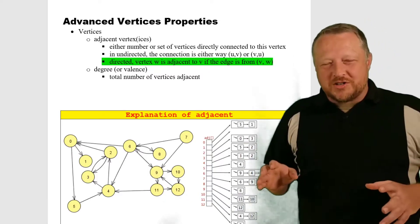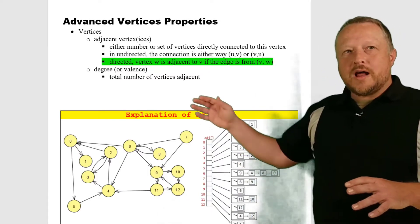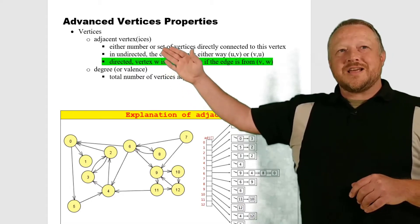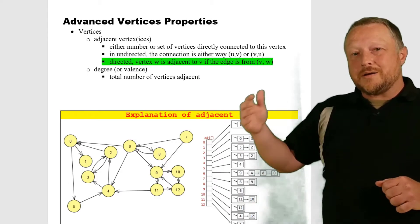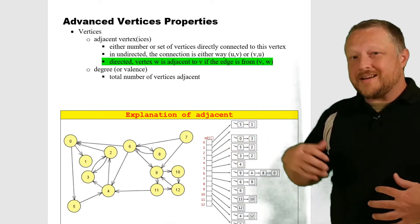In the advanced vertices properties, we're going to have to start worrying about two things. That's adjacent vertices, to let us know what other items it is connected to starting from there.